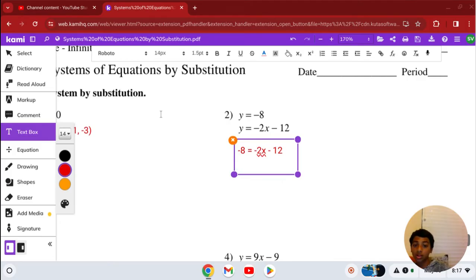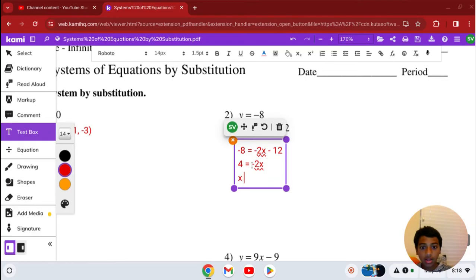Negative 12 plus 12 is 0, and negative 8 plus 12 is 4, equals negative 2x. Now we can divide both sides by negative 2, giving us x equals 4 divided by negative 2, which is negative 2.